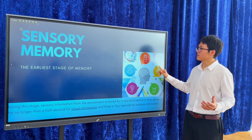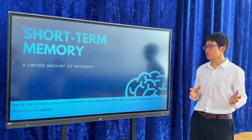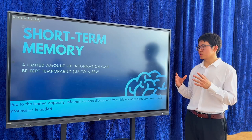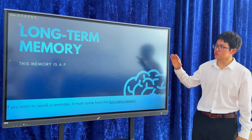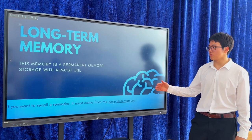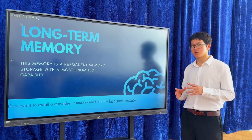Short-term memory is a limited amount of information that can be kept temporarily, up to a few minutes, in consciousness. The third one is long-term memory. This memory is a permanent memory storage with almost unlimited capacity that you can use throughout your whole lifestyle.